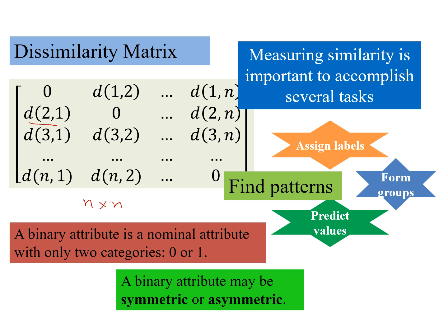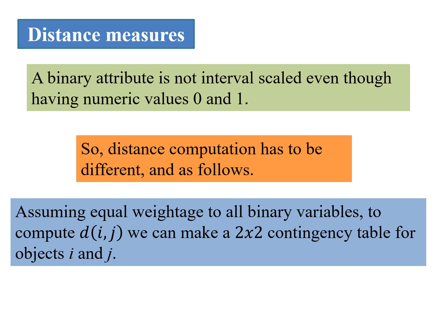Now binary attribute is a nominal attribute with two categories, 0 or 1, and it could be symmetric or asymmetric. Now we cannot consider a binary attribute as interval scale or as other numeric attributes. So the distance computation, that is why, has to be different.